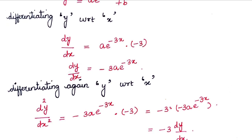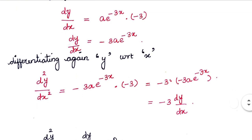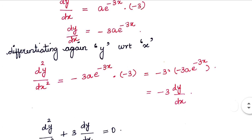Differentiating y again with respect to x, we get d²y/dx². Here -3a is a constant so it comes out as such. Differentiating e^(-3x) gives e^(-3x), and differentiating the power -3x gives -3. So overall we get (-3) × (-3a)·e^(-3x), which is nothing but -3·(dy/dx). So d²y/dx² = -3·dy/dx.